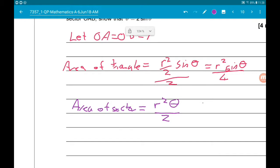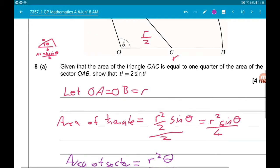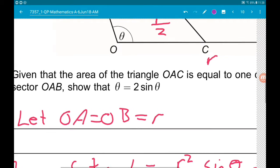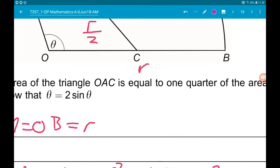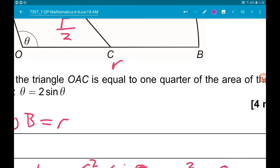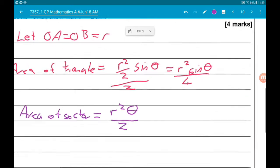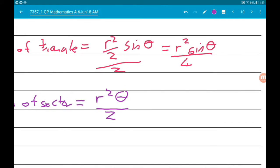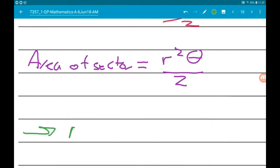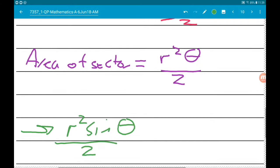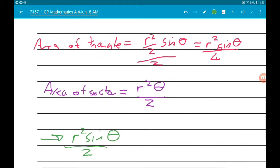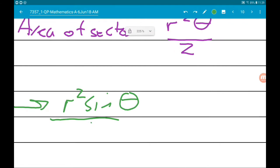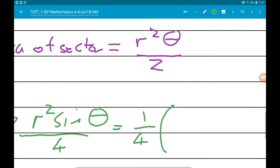So, that's the area of our sector here as well. Now, we know, given that the area of the triangle is equal to one quarter the area of the sector. So, we know that R squared sin theta over four is equal to one quarter, R squared theta over two.